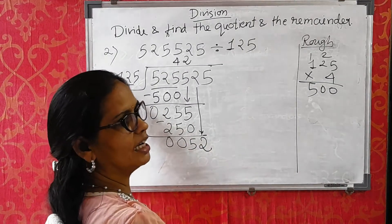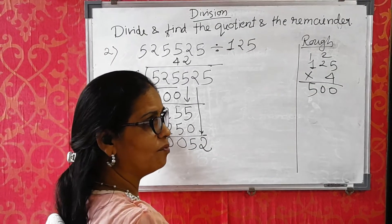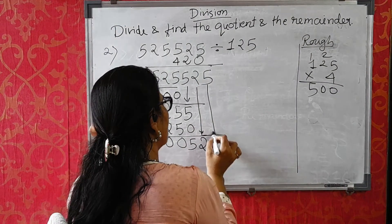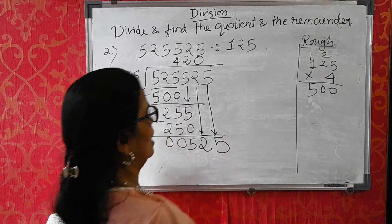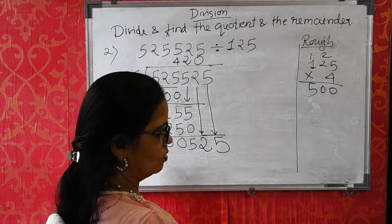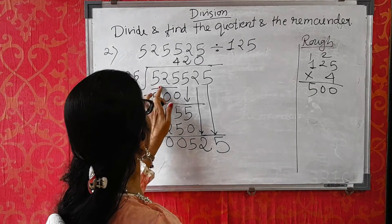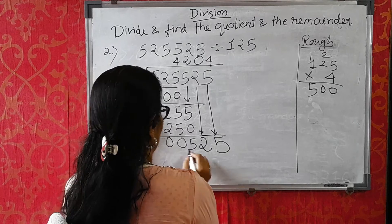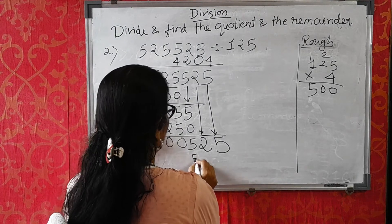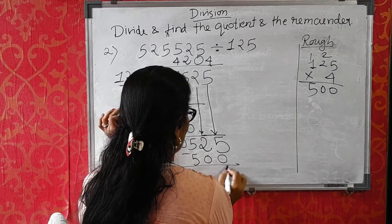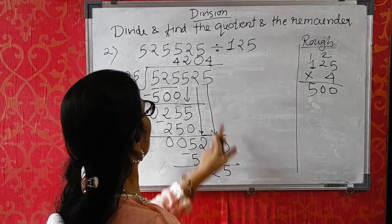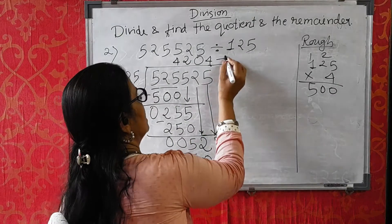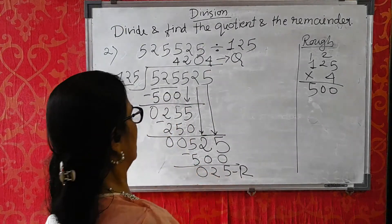Now 52 is less than 125 — that means it doesn't go. So put 0 for that first, then only you can take a new digit down from the dividend. Now 525 again — it will go by 4. 125×4=500. So the remainder now is 25, and there is no further number in the dividend. This is your quotient and this is your remainder.